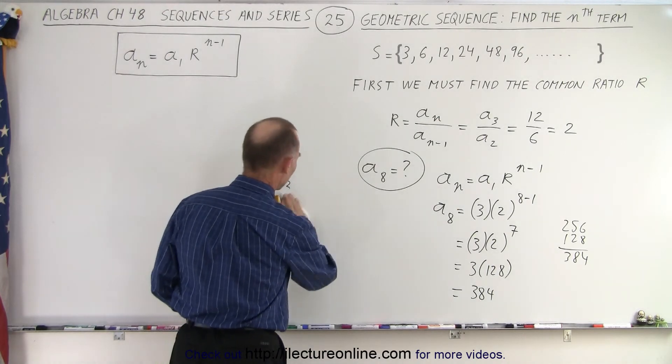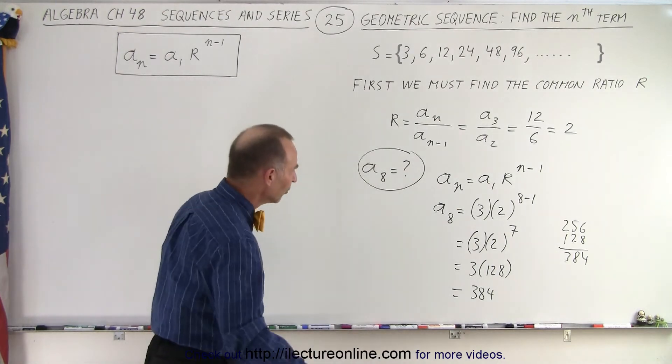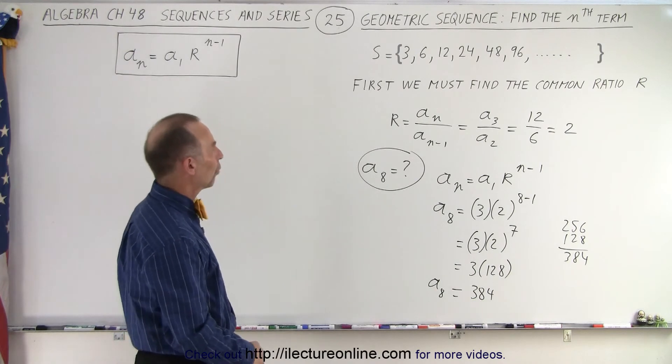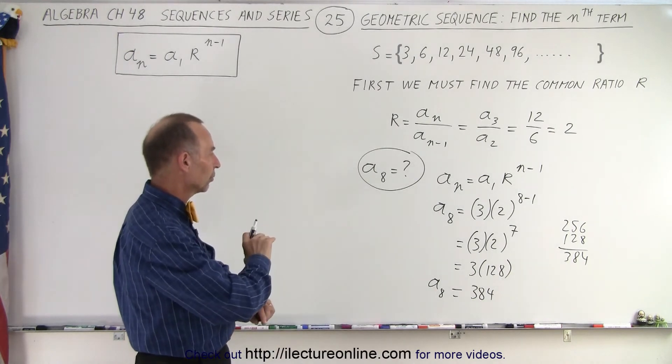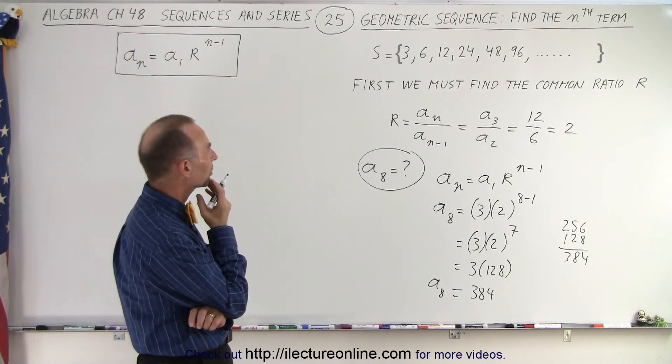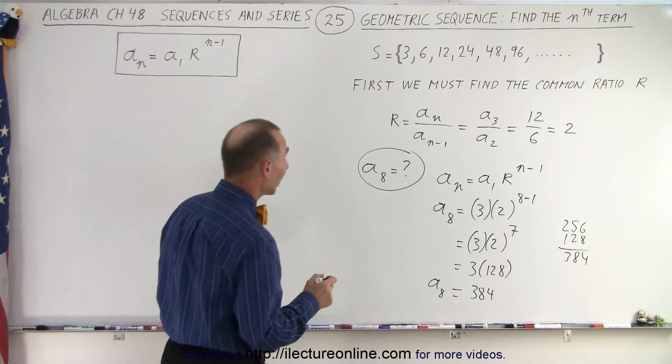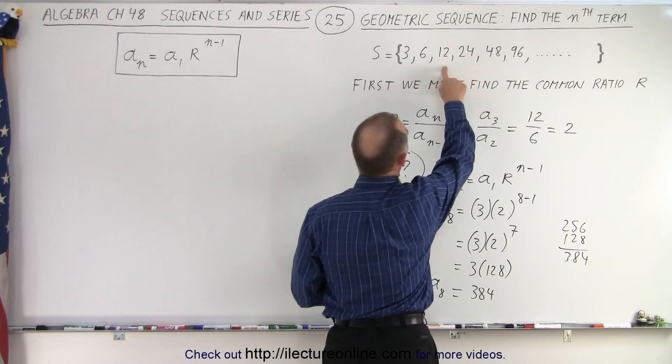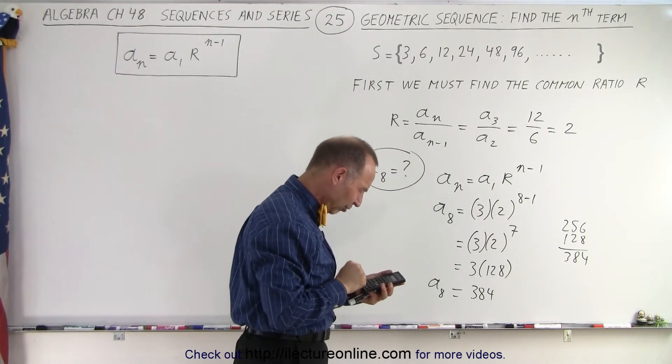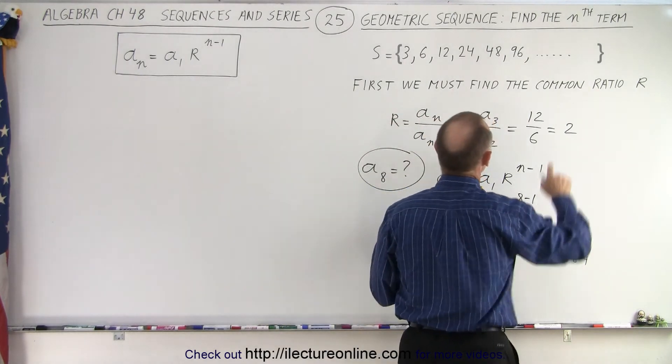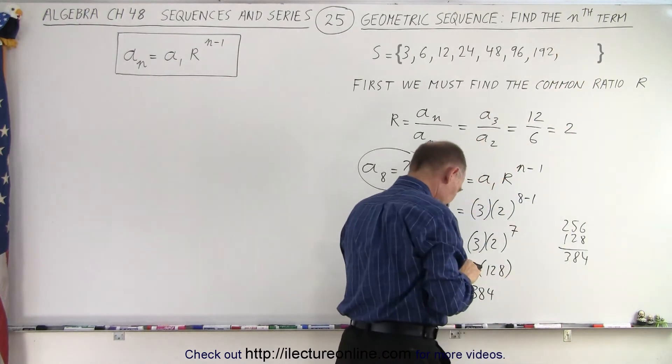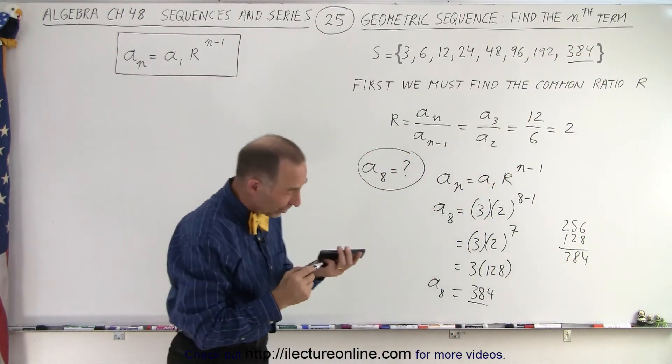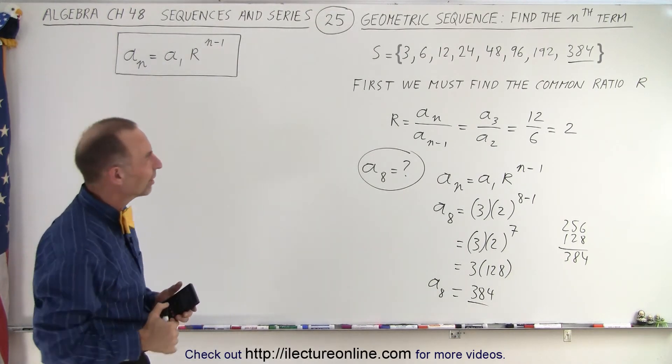A trick that we used to do before we had calculators. So now we've determined that the 8th term is equal to 384. Let's check it out to see if we have that correctly. Something seems a little off. I want to make sure we did it correctly. So that's the first, second, third, fourth, fifth, sixth term. So 96 times 2 gives us 192. So the next term would be 192, and then multiple times 2, and sure enough the next term would be 384. And you can see we got the right value. And we did it correctly. It was a good thing to check to see if we did it correctly.